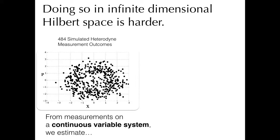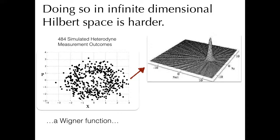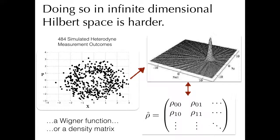State tomography in infinite dimensional Hilbert space is a really, really hard thing to do. By infinite dimensional Hilbert space, I mean that we have some sort of continuous variable system. We might make some measurements, and from these measurements we might try and plot a Wigner function — a nice little way of representing this quantum state in phase space. Equivalently, we might be tempted to try and write down a density matrix. These are different ways of representing the same thing, and the whole point of state tomography is to go from the data on the left to one of these two representations, perhaps both on the right.